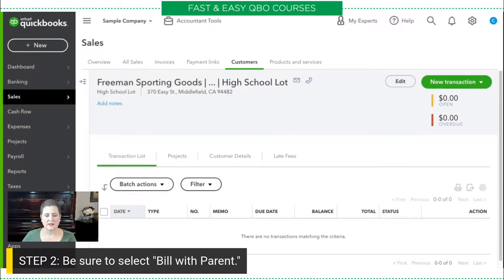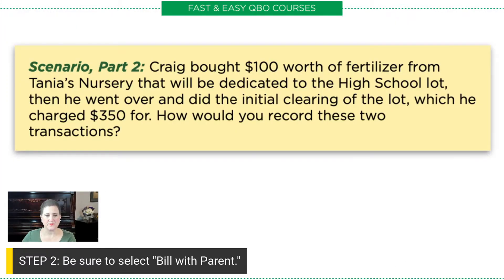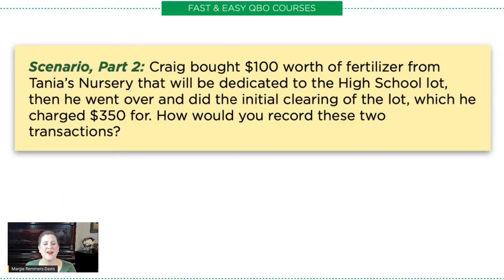Let's take a look at scenario Part 2. Craig bought $100 worth of fertilizer from Tanya's Nursery that will be dedicated to the high school lot. Then he went over and did the initial clearing of the lot, which he charged $350 for. How would you record these two transactions?